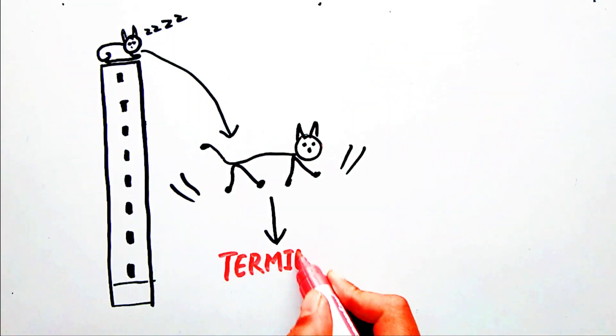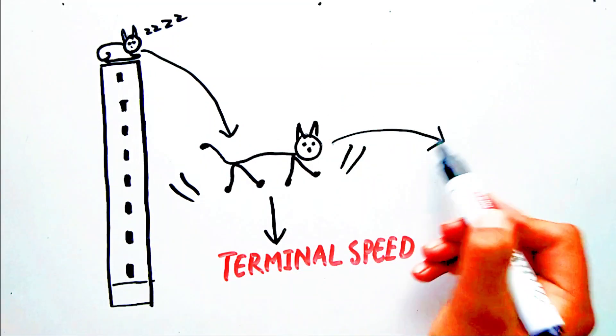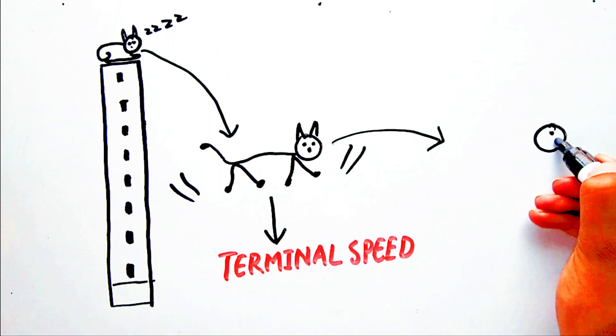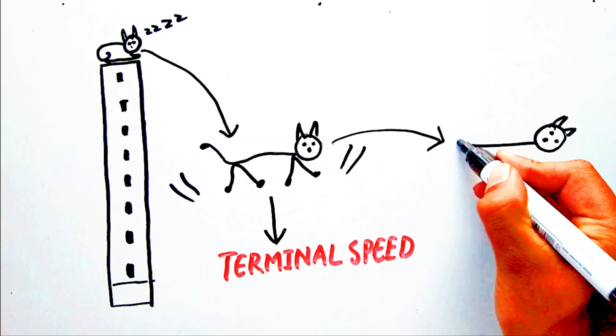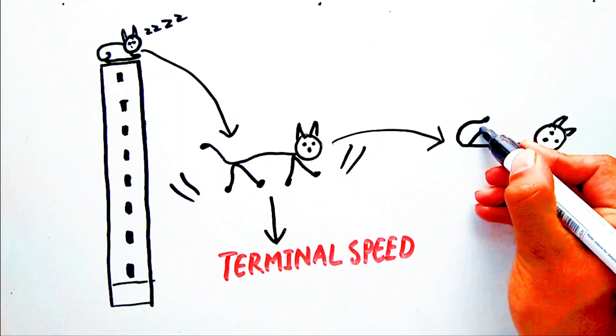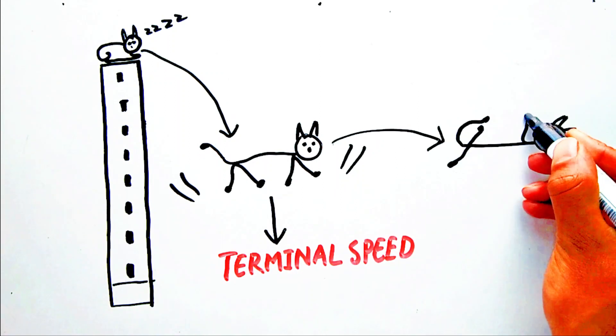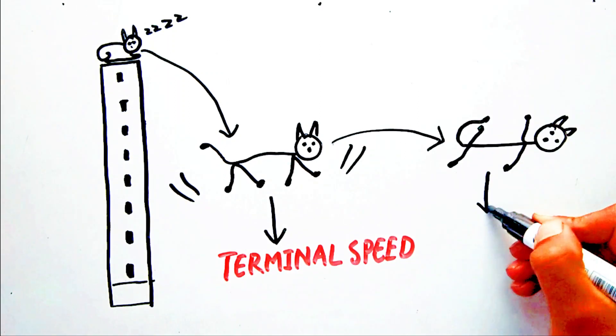But if terminal speed is reached, the acceleration disappears and the cat relaxes somewhat, instinctively separating its legs outward in order to increase the air drag on it until it must finally get ready for the landing.